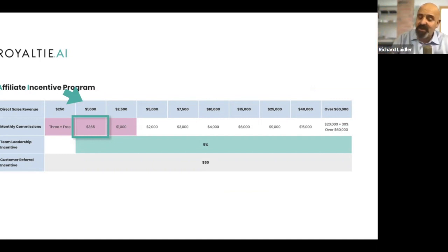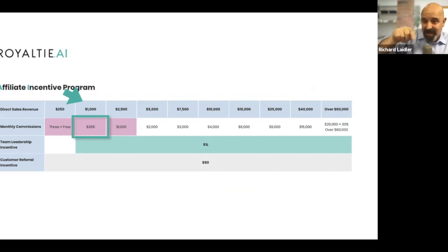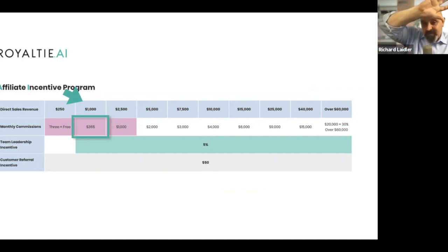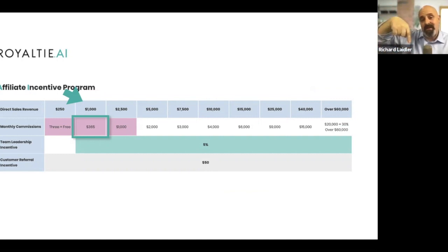Now that's not a huge amount of money, but it's a car payment and it's coming in every month just because you got something started. That $87 that's coming in — even if people are getting it for free, this commission is still getting paid. And that $365 comes in month after month after month.